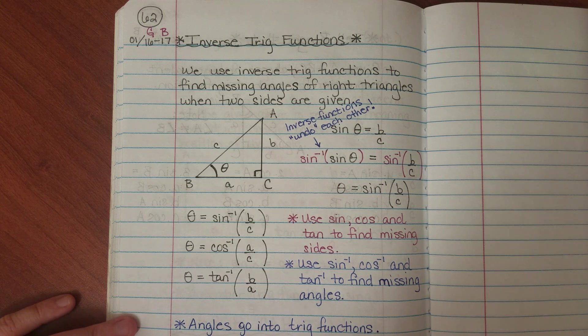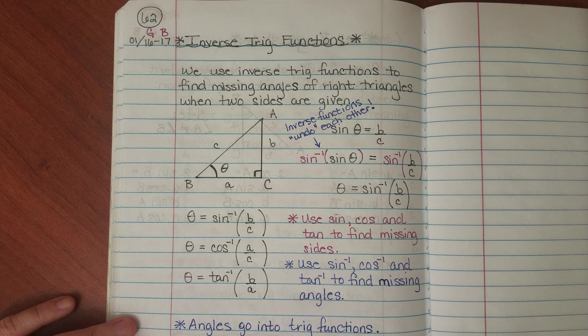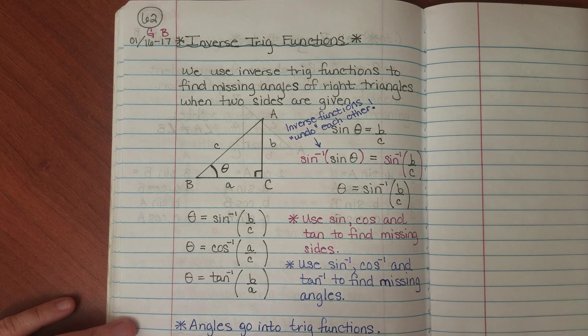Inverse trig functions are used to find missing angles of right triangles when the right angle, obviously, and two sides are given.